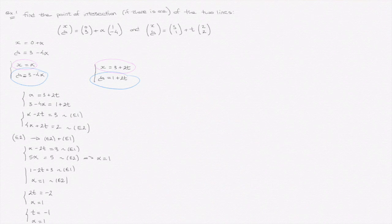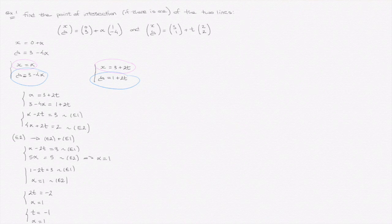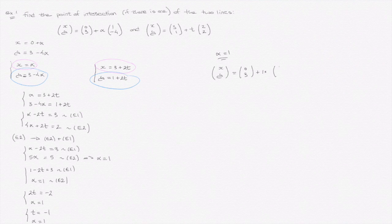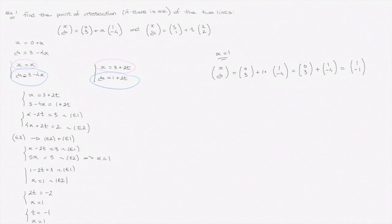To find the actual coordinates of the point of intersection, we replace either alpha by 1 in the first line equation, or t by negative 1 in the second line equation — whichever suits you, they'll both lead to the same point. With alpha equals 1, the first line equation becomes xy equals 0, 3 plus 1 times (1, -4), which gives 0, 3 plus 1, -4, equaling the point (1, -1).